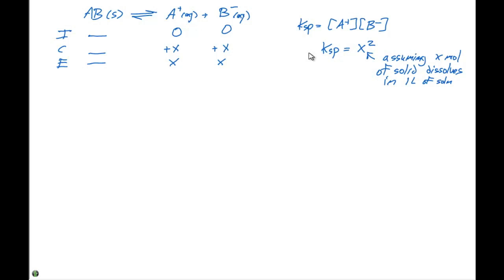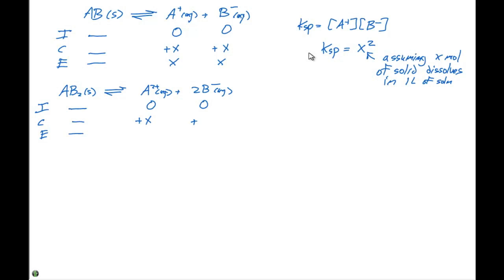For the AB₂ group: AB₂(s) ⇌ A²⁺(aq) + 2B⁻(aq). If x moles of solid dissolve, the change in concentration is +x for the cation and +2x for the anion, giving equilibrium concentrations of x and 2x respectively. So KSP = [A²⁺][B⁻]² = (x)(2x)² = 4x³. The key point is that 4x³ and x² are different expressions.